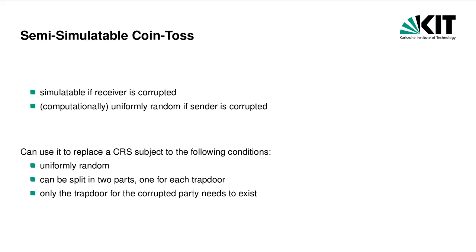We have seen that we cannot just adapt the commitment scheme of Portnex et al. to our setting by replacing the extractable commitment schemes with timed commitment schemes to receive a simulatable commitment. However, the variant where we only replace the commitment to the index vector i is useful as it suffices to construct a coin toss that is semi-simulatable. In our simulation, the index vector i serves as the short-term trapdoor and we use the semi-simulatable coin toss to establish a long-term trapdoor. Intuitively, a semi-simulatable coin toss is a coin toss that is only simulatable if one designated party is corrupted. If we use the commitment scheme discussed previously, the resulting coin toss is simulatable if the receiver is corrupted and the simulator plays the committer. If the committer is corrupted and the receiver is honest, the result is not simulatable but essentially uniformly random. If we had a fully simulatable coin toss in the plain model, we could use it to replace the uniformly random common reference string of a UC-secure protocol.